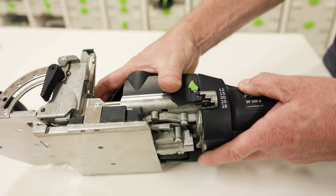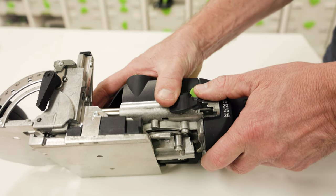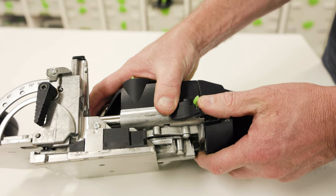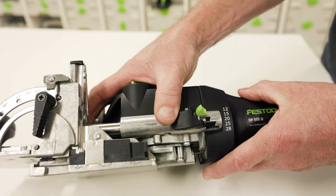To adjust the mortise depth, press in on the depth adjustment lock. Move the depth adjustment lever to the step position of the desired depth. Release the depth adjustment lock.